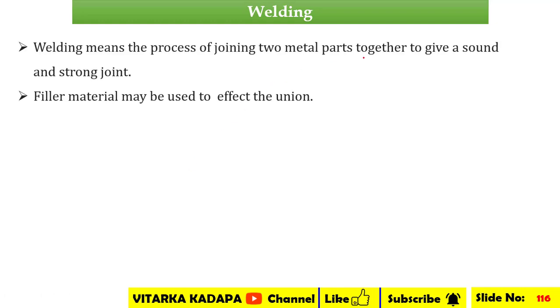Welding is the joining process in which two metal parts are joined together to give a sound and strong joint with the help of a weld pool, which is allowed to solidify. For example, having one part and another part, with the help of some external material called a filler rod, we create a weld pool. That particular part is termed as a bead, and this is called a welded joint. Filler metal is used to affect the union.